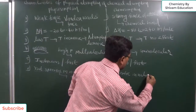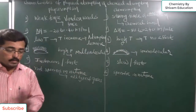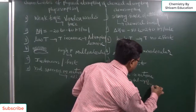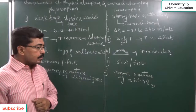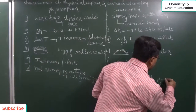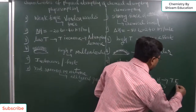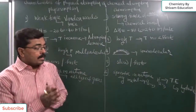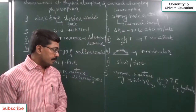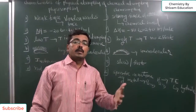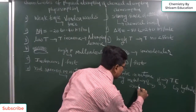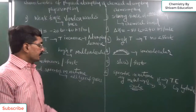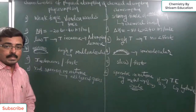In chemisorption, if there is a possibility of bond formation then adsorption takes place, otherwise not. For example, on the surface of a metal, oxygen adsorption occurs forming an oxide, while hydrogen gas adsorbs on the surface of transition elements forming a hydride. So chemisorption is specific in nature, while physisorption is not specific — all types of gas can adsorb easily.